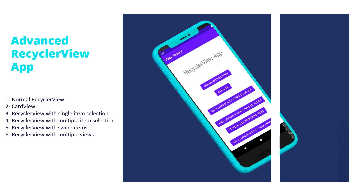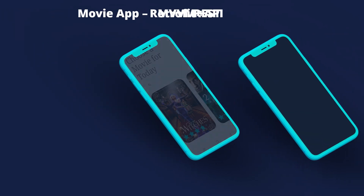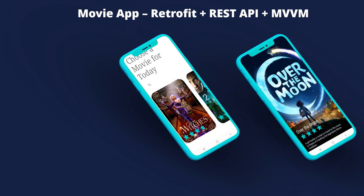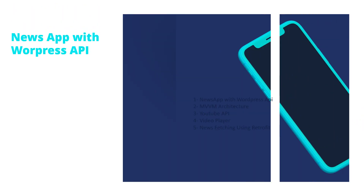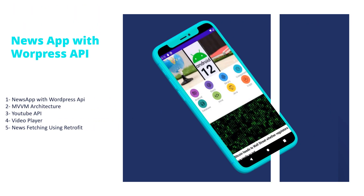We will make an advanced recycler view application featuring a normal recycler view, card view recycler view, single item selection, multiple item selection, swipe items, and multiple views. Also we will make a movie app using Retrofit, REST API, and MVVM, and a news application with the WordPress API — a very complex app using MVVM architecture, implementing YouTube API, video player, and news fetching using Retrofit.